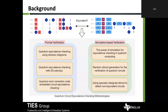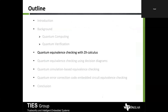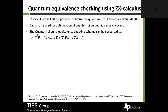In this talk, we use the words verification and equivalence checking interchangeably. For formal verification, we consider decision diagrams, ZX calculus, and our proposed quantum error correction code-based formal verification. For simulation-based approaches, we have random stimuli generation and special designed stimuli generation. We will look at each of these methods in the next few slides.